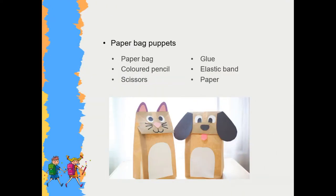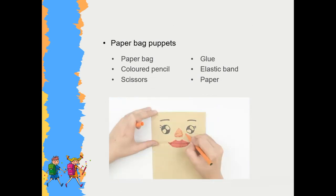For paperback puppets, we need paperback. By using colored pens, we can draw an animal on the paperback, for example. We can use paper as the eyes and ears of the animal. Also, we can make an easy puppet by just drawing a face on the paperback. Then we use plastic band to fix paperback over our wrist. Our puppet is ready to use.